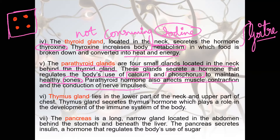The thymus gland is present in the lower part of the neck and the upper part of the chest. Thymus gland secretes thymus hormone, which plays a role in the development of the immune system of the body. So the three glands in the neck region are: thyroid, which releases thyroxine; parathyroid, which releases hormones needed for calcium and phosphorus metabolism in bones; and thymus, which plays an important role in the immune system.